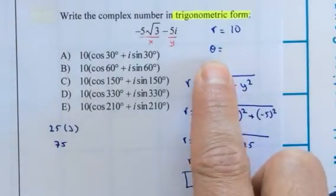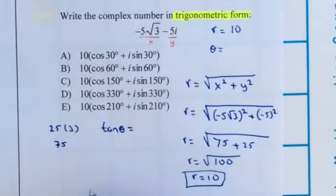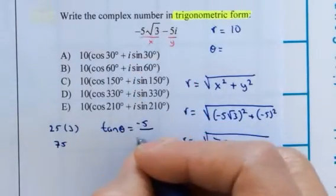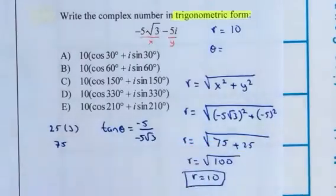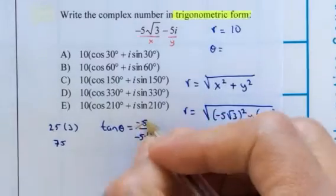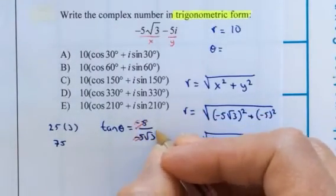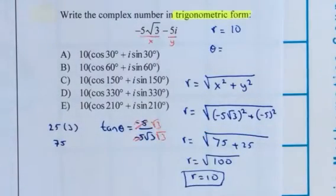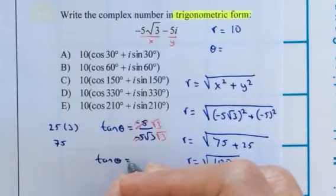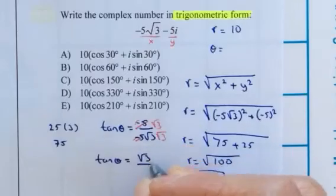And then I need theta. To find theta, we're going to use tangent of the angle theta is y over x, which is negative 5, and the x is negative 5 square root of 3. The negative 5s cancel, so it's going to be positive. And I'm going to rationalize my denominator, so I'm going to multiply by the square root of 3. That will give me the tangent of theta equals square root of 3 over 3.